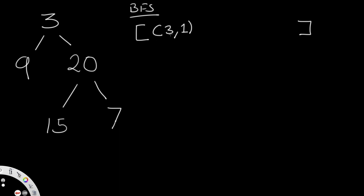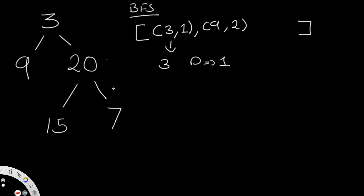We pop out the zeroth element — so we pop out node 3 at depth 1. We check: does it have a left child? It does — node 9. So we add node 9 to the queue with depth 2. We also check for a right child — it does have node 20 — so we add 20 with depth 2 as well. Now node 3 has been popped out, so it no longer exists. That's one iteration done.